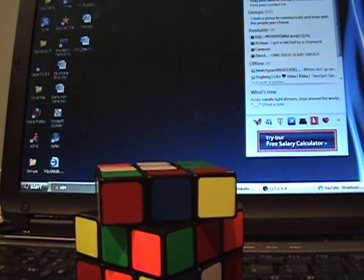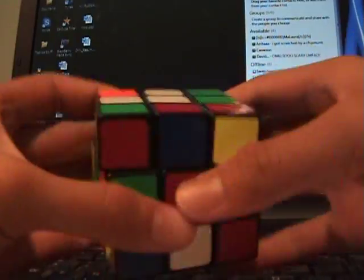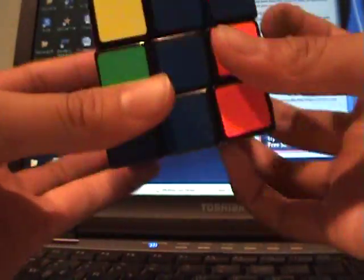So, here we go. Scrambling the cube up. Let me actually scramble two cubes. Again, I'm just going to get the cross. No explanation needed. F2L.